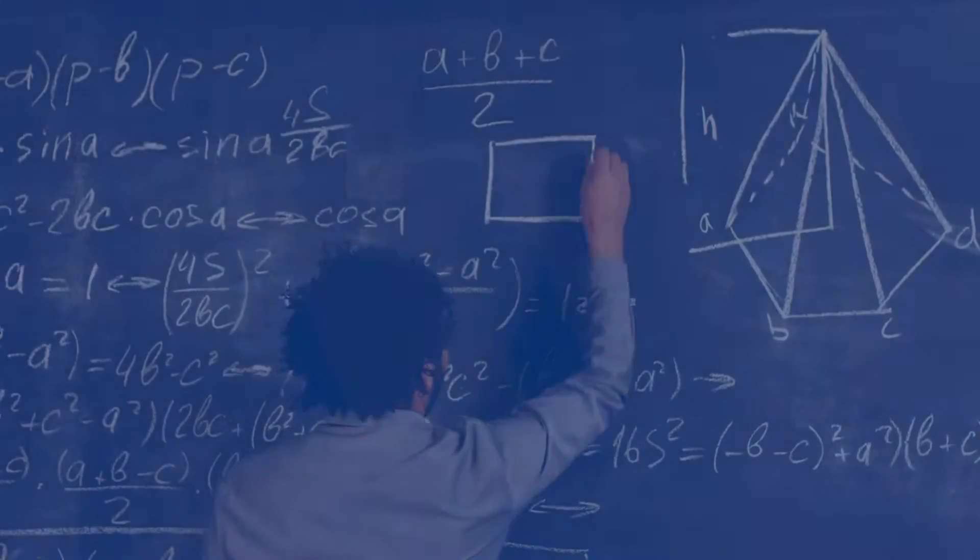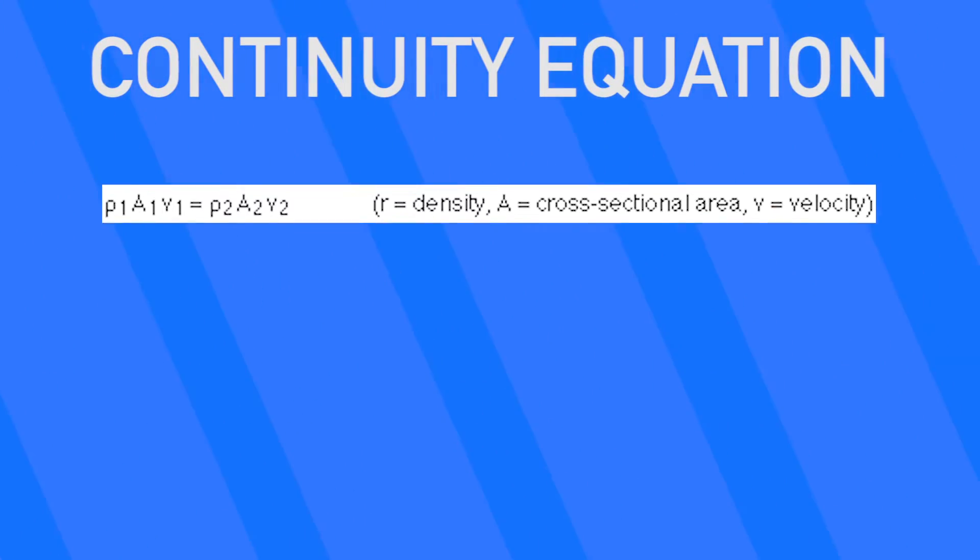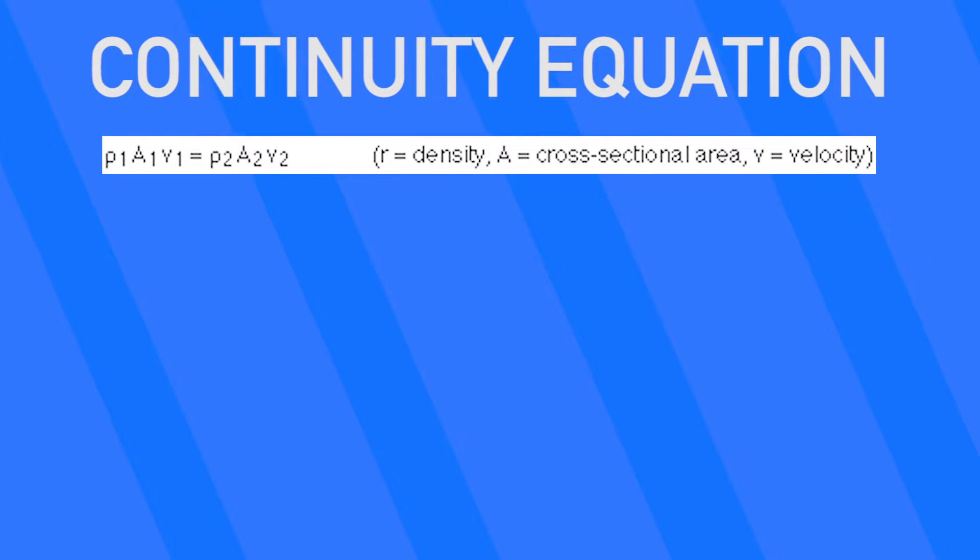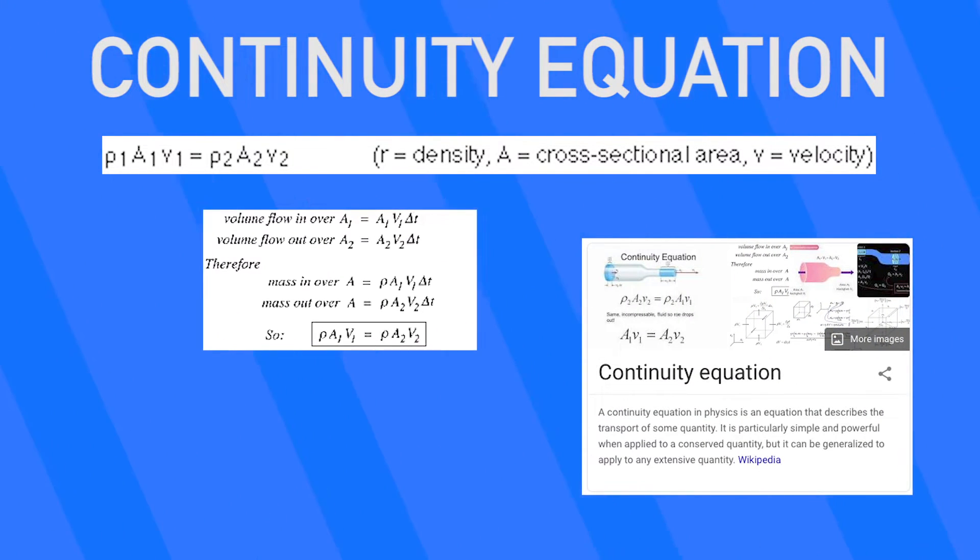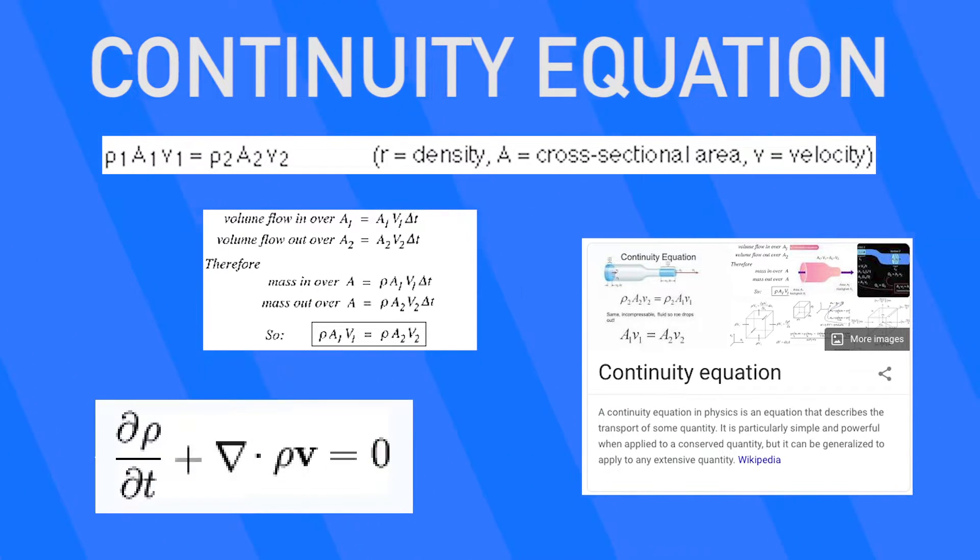The first equation we'll need to learn is the continuity equation, or the equation of continuity. The equation states that for an incompressible fluid flowing through a tube or pipe of variable cross-section, the mass flow rate is the same everywhere in the tube. The mass flow rate is simply the rate at which a given weight of water flows through the tube. It's just the total mass of the fluid divided by the time interval.